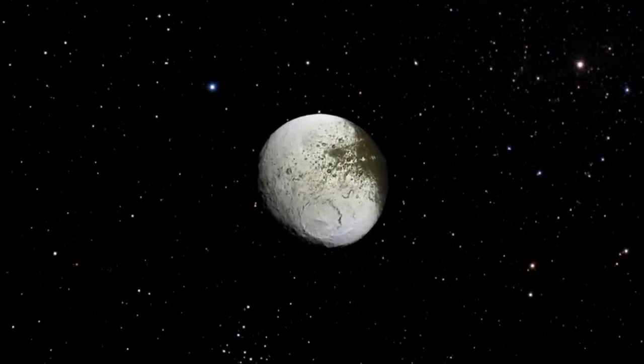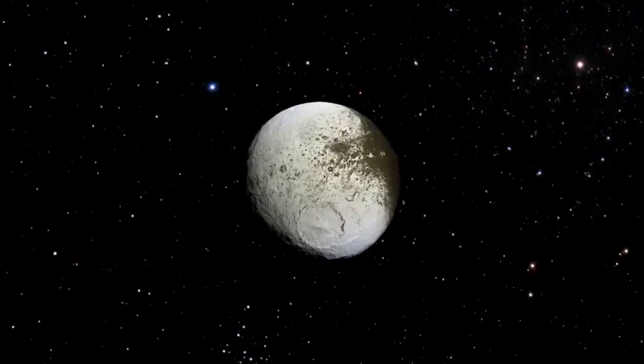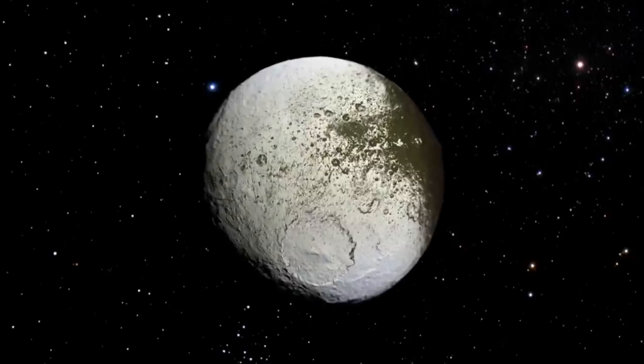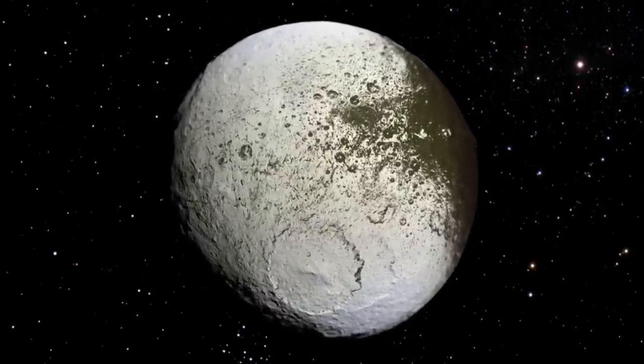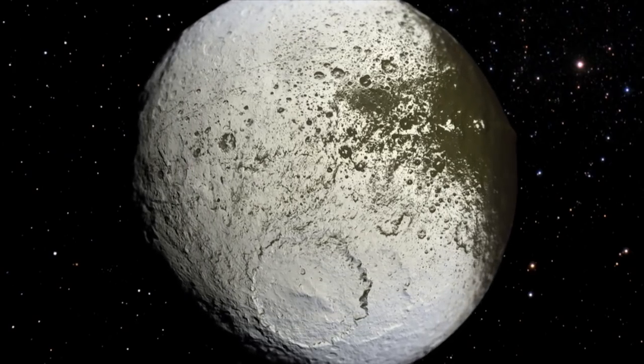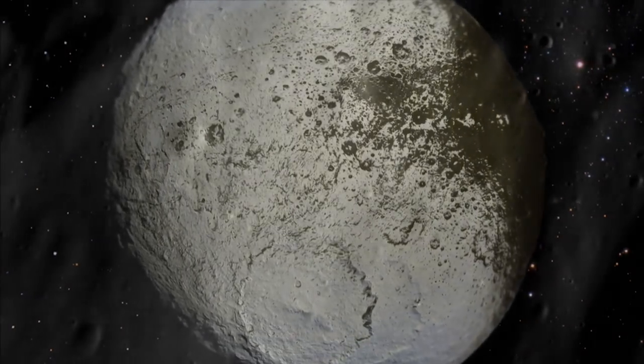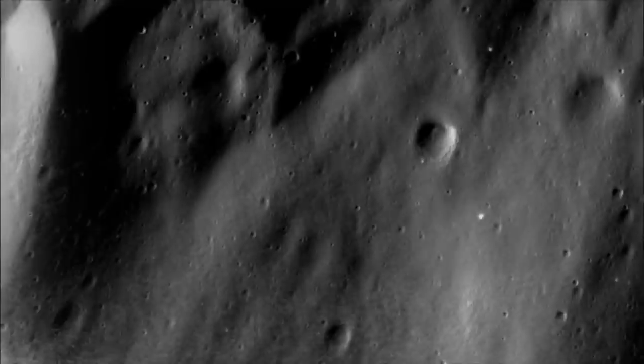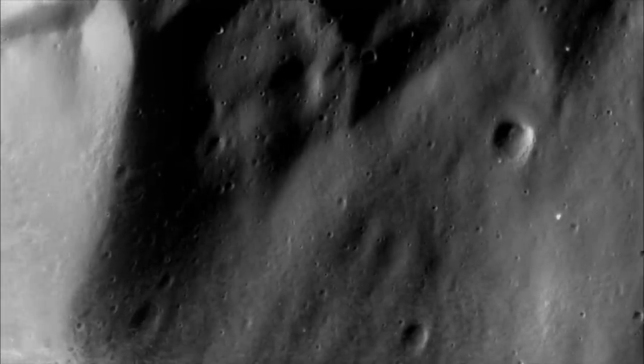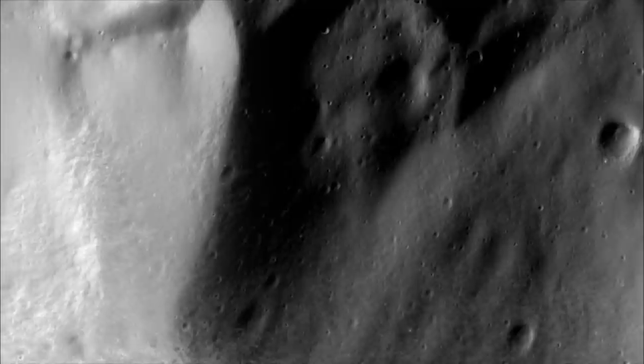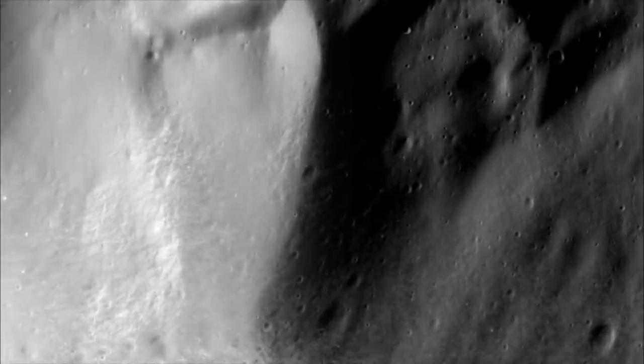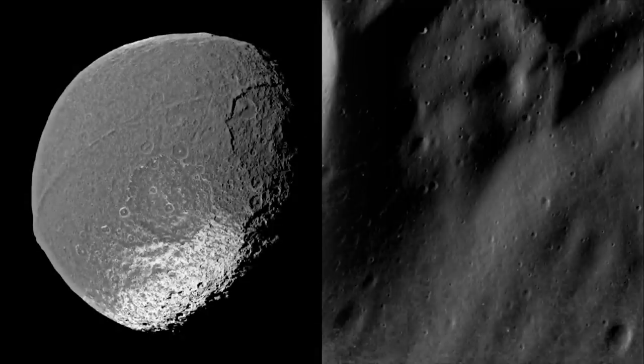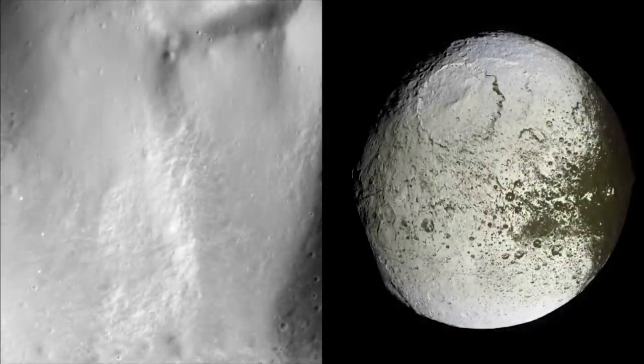Four times closer to Saturn and four times larger than Phoebe, Iapetus is a very different kind of moon. It is 80% ice, but its most distinctive feature is its strange two-tone shading. While one side of Iapetus is extremely dark, the other is whitish-gray. This color difference also corresponds to a significant temperature difference. On average, the dark side is 15 degrees warmer than the light side.